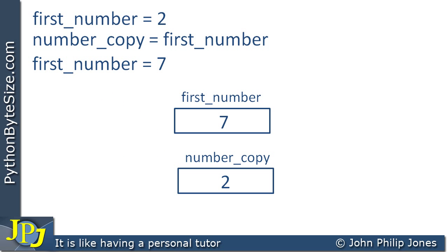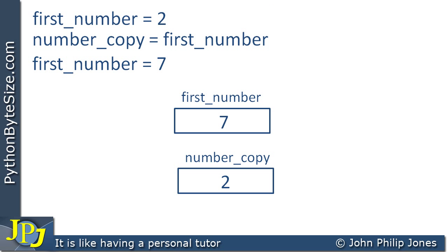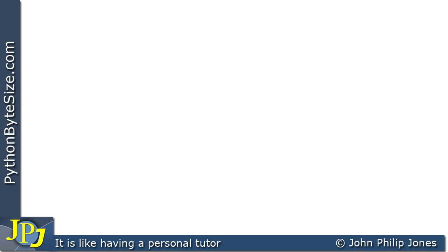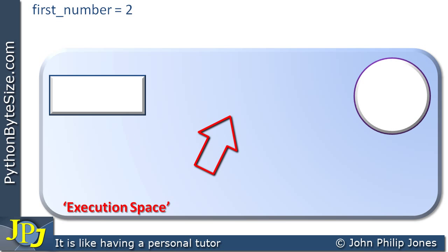This is a straightforward program that has three program statements. What we're now going to do is have a look at this from the viewpoint of the execution space. Here we can see the program statements again. First_number is assigned 2, and this will create an execution space and an object reference, and an object will appear.